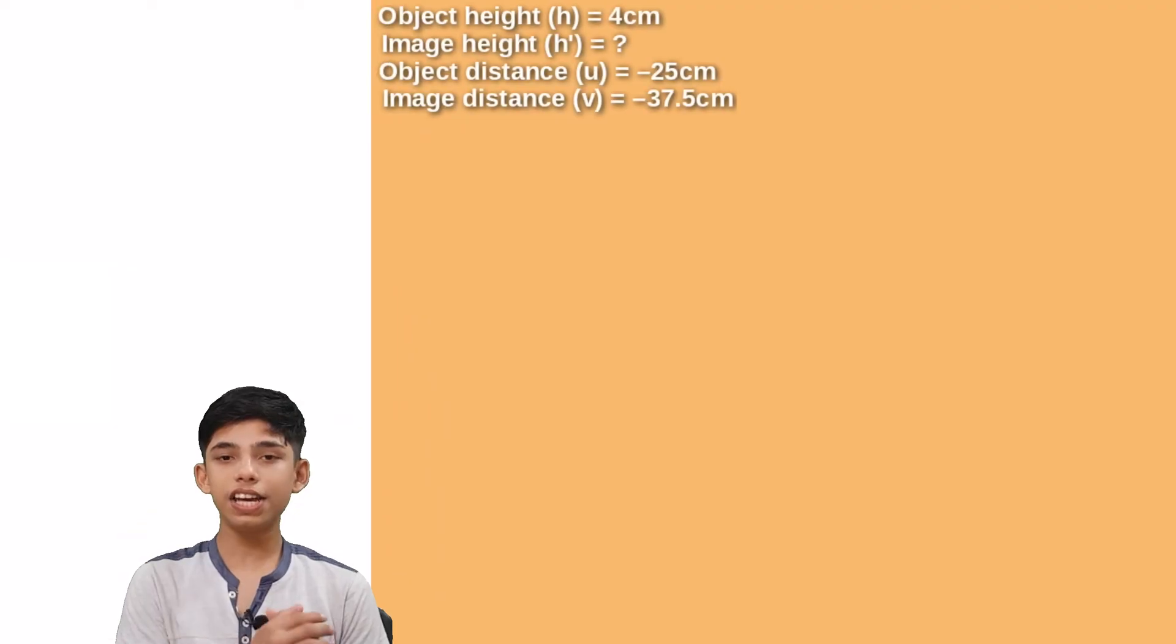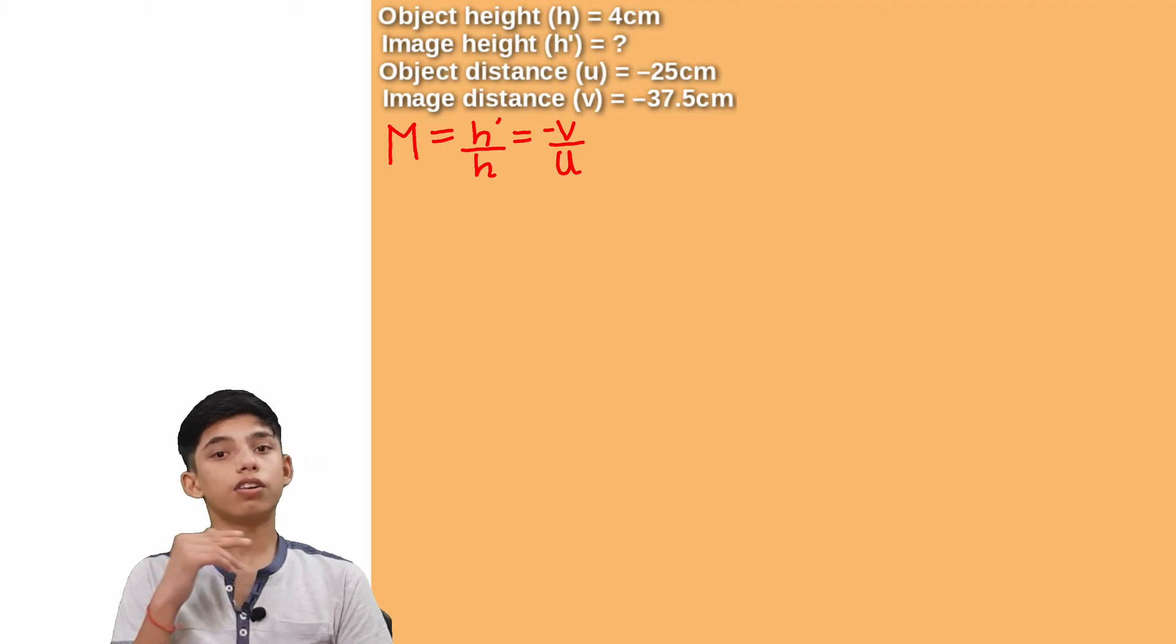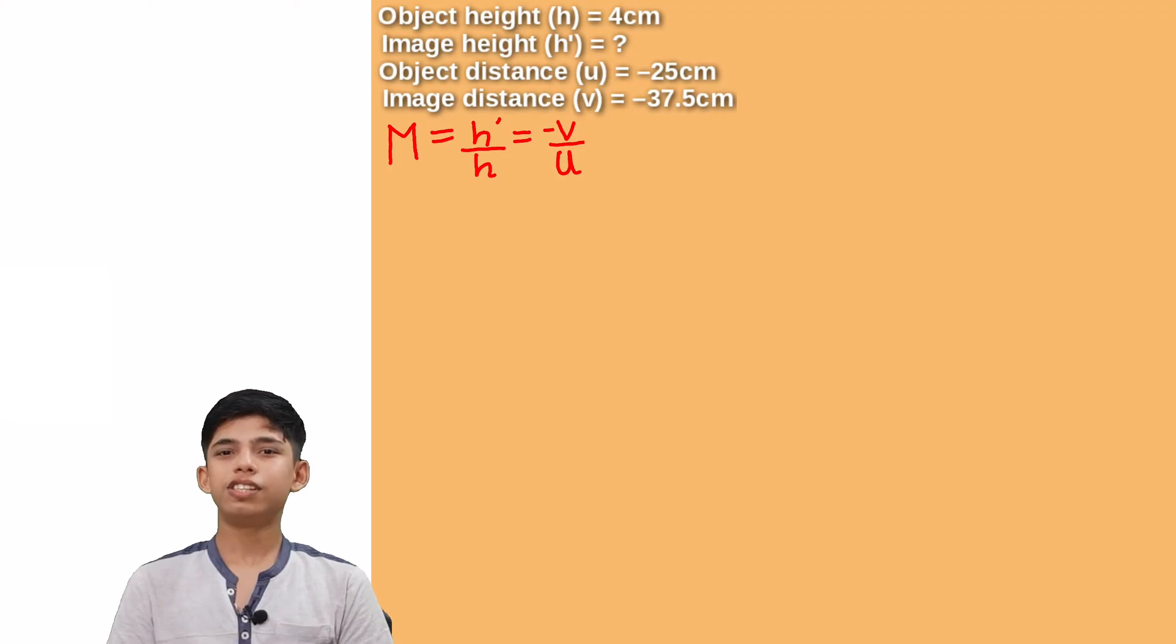Our first thing is done here. Now we have to calculate the size of the image and we are going to use magnification for this. Magnification is equal to h dash by h and it also equals to minus v by u and h dash is the image height and h is the object height.